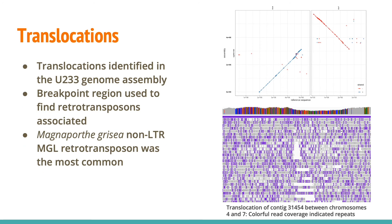Translocations often occur due to retrotransposons. On the MUMplot graphs, this looks like one contig split between two chromosomes. These regions were then inspected in IGV for misassemblies, and if none were found, this indicated a possible translocation. To confirm a translocation, the region had to have at least two raw reads with unique sequences anchoring them on either side. Finally, the translocation region was BLASTed to see if the sequence corresponded to any transposable element sequences.